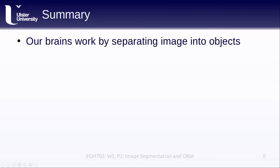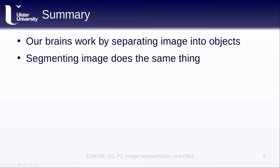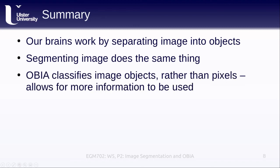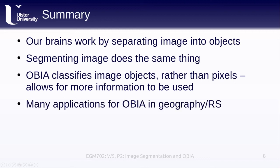To sum all of this up: our brains tend to work by separating an image into objects, and when we do image segmentation we're having a computer do the same thing. Object-based image analysis helps us classify image objects rather than pixels, which allows more information to be used in the classification process as well as typically more accurate results, because we get rid of some of the random noise in the classification. There are a number of applications for OBIA in geography and remote sensing, and the next slide will show a list of different papers uploaded to Blackboard.